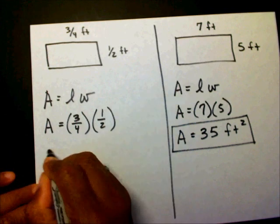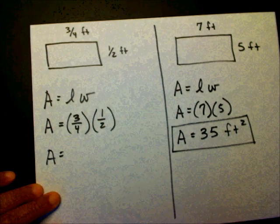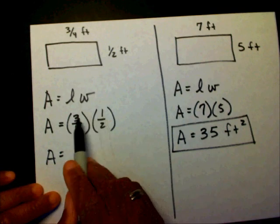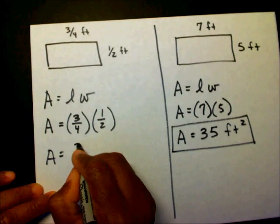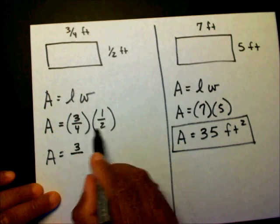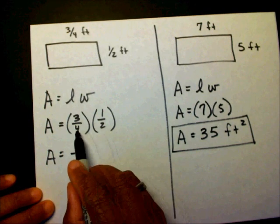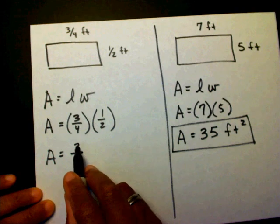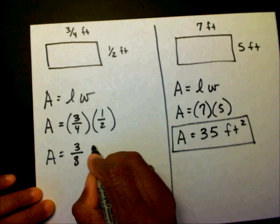And if you notice in my video on multiplying fractions, you know that you just multiply your numerators. 3 times 1, which is 3. And multiply your denominator. 8 times—I'm sorry—4 times 2, which is 8. So that's going to be 3 eighths feet squared.